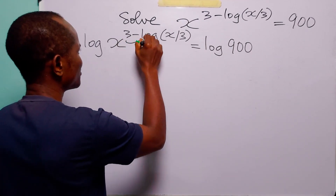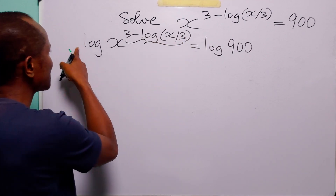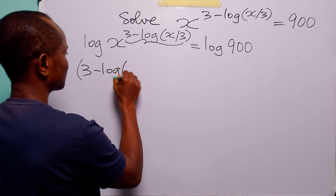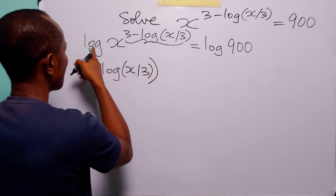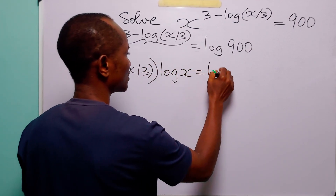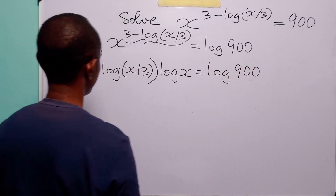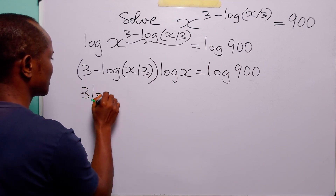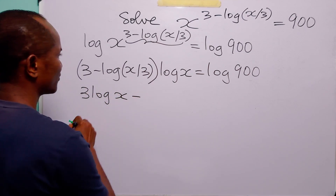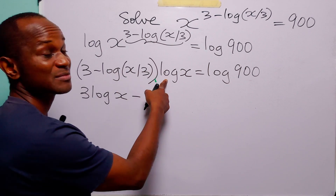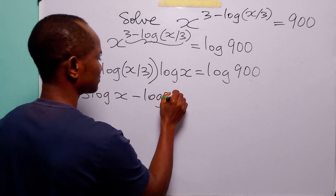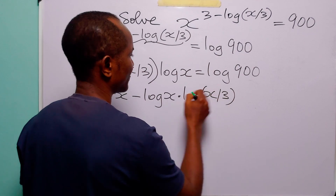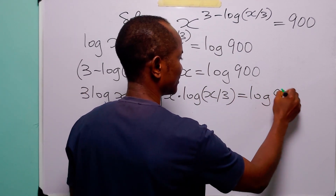The next thing we are going to do is apply the power rule of logarithms — the rule that says we can bring down the exponent to become a multiplier. When we do that, we have that (3 minus log x over 3) multiplied by log x is equal to log 900. Expanding the left hand side, we have 3 times log x, which is 3 log x, minus (log x over 3) times log x, still equal to log 900.